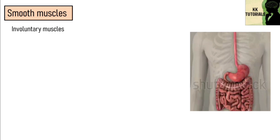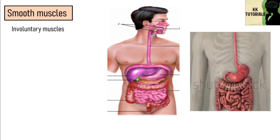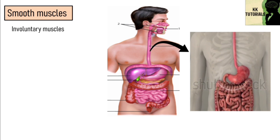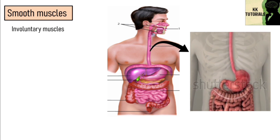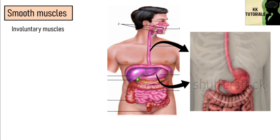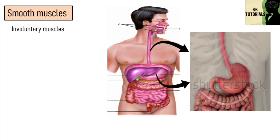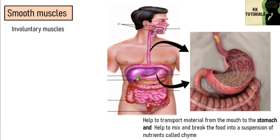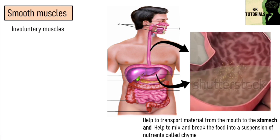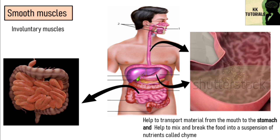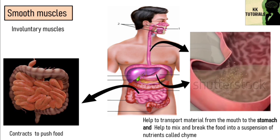Smooth muscles are located in various internal structures, including the digestive tract. In the digestive tract, they are present in the esophagus, where they help to transport material from the mouth to the stomach. In the stomach, contraction of these muscles helps to mix and break the food into a suspension of nutrients called chyme. They are also present in your intestine, where these muscles contract to push food through your body.